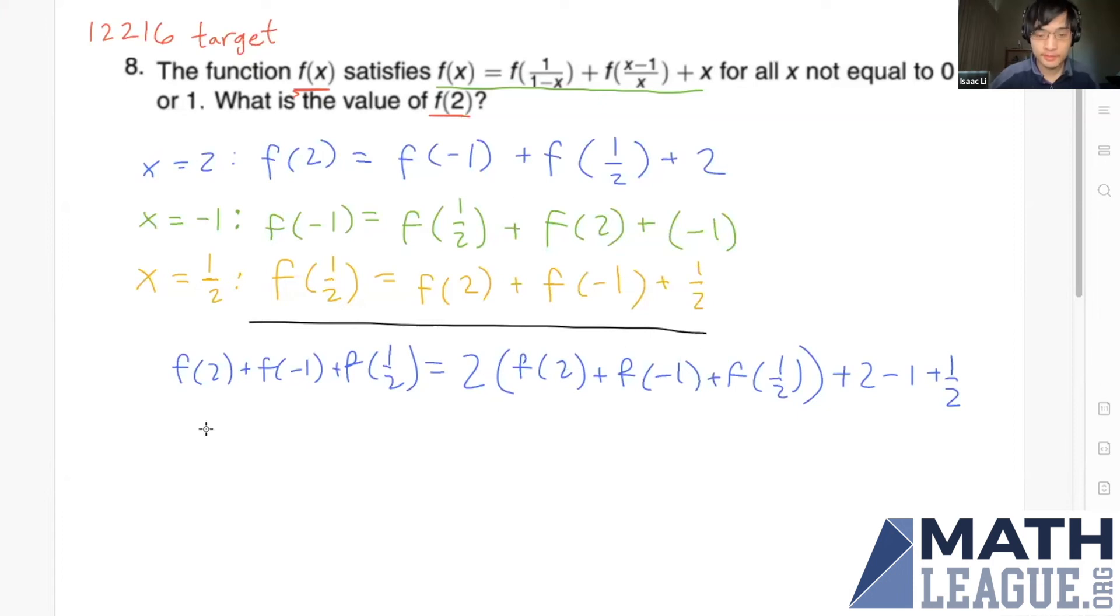We can solve for this sum. Moving terms to opposite sides, we get f(2) + f(-1) + f(1/2) = -3/2.